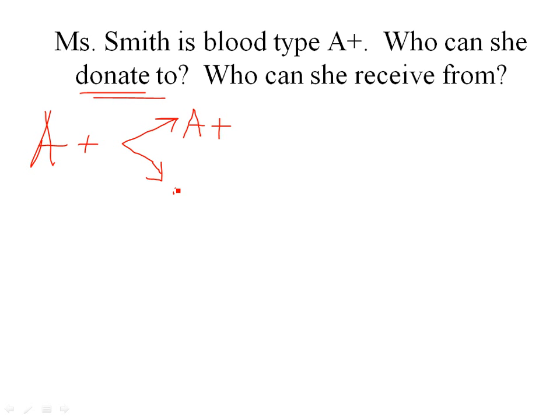Can A positive give to AB positive? Think it through: the A matches and the positive matches. Someone who's AB positive is going to say A antigen belongs in me and RH antigen also belongs in me. It's not going to worry that the B is not there — it just knows the antigens coming in match. So that's an acceptable and compatible donation. But AB negative would not work. So an A positive person can give to A positive and can give to AB positive — but that's it.